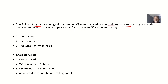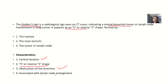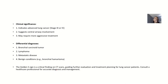The characteristics of the Golden S sign include a central location and an S or reverse S shape. It shows obstruction of the bronchus and is associated with lymph node enlargement.